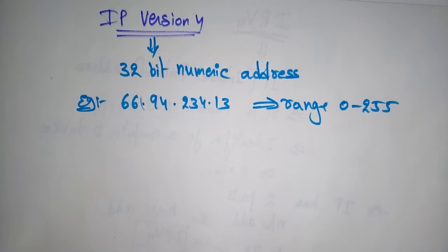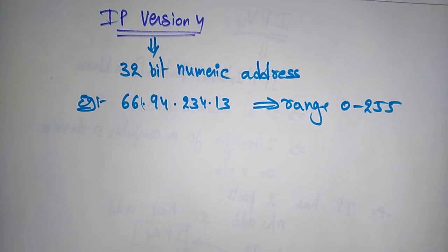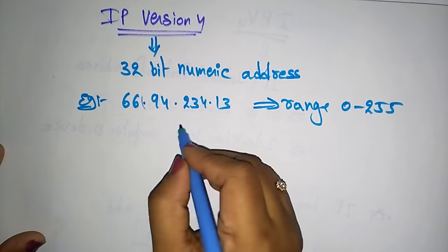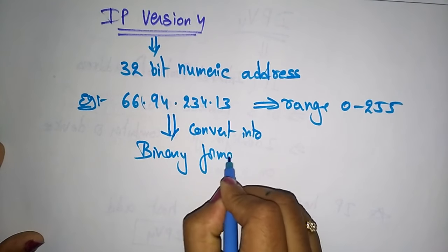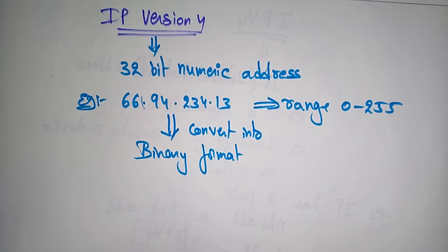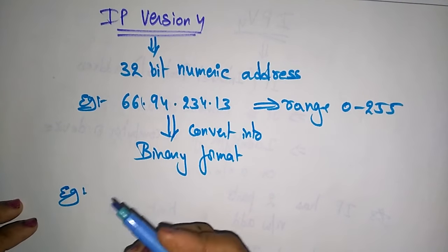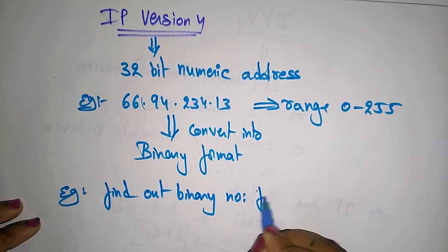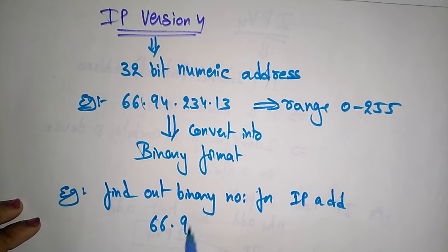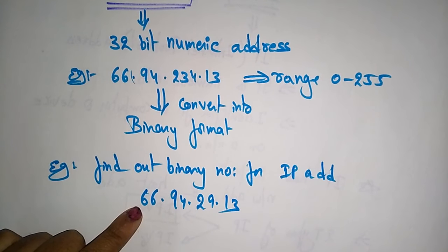The computer and network don't read the IP address in this standard numeric format. Whatever numeric address you are given will be converted into binary format. Binary format means numbers in the form of 1s and 0s. Let's find out the binary number for an IP address. Let's take 66.94.29.13 — this is the IP address in decimal form. I want to convert it into binary so that the system can understand.